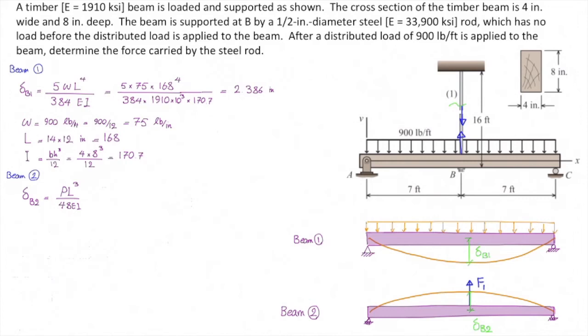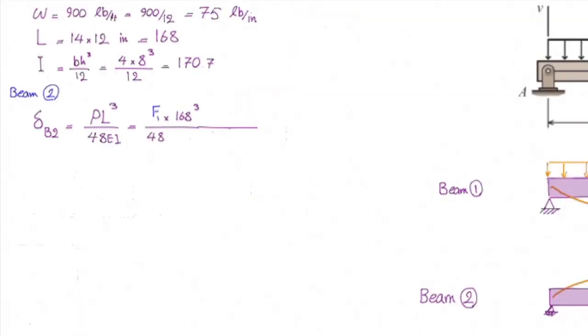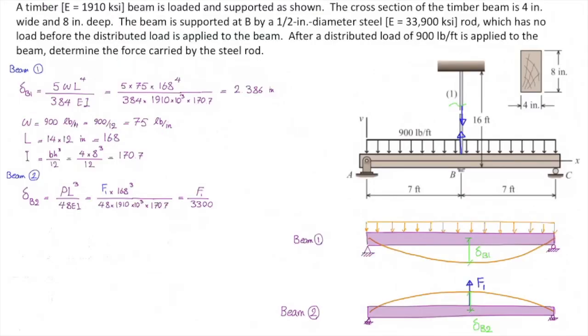Now, let's get back to the problem. Here, P is the unknown internal force or F1. L, again, is the length of the simply supported beam, which is 168 inch. And EI is what we got before. And if you plug the value, deflection of the second beam at the middle would be equal to F1 divided by 3300.